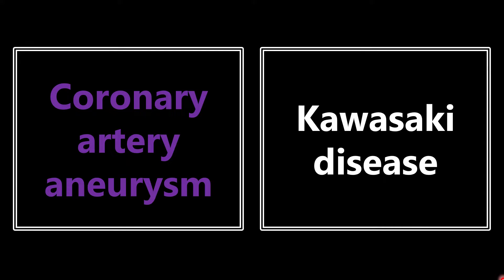Next is coronary artery aneurysm. If you see that described on the exam, the association is Kawasaki disease. That is the main concern in children who get Kawasaki disease — the really dangerous, scary thing is coronary artery aneurysm. This can be caused by other things as well, but the board association here is specifically Kawasaki disease.